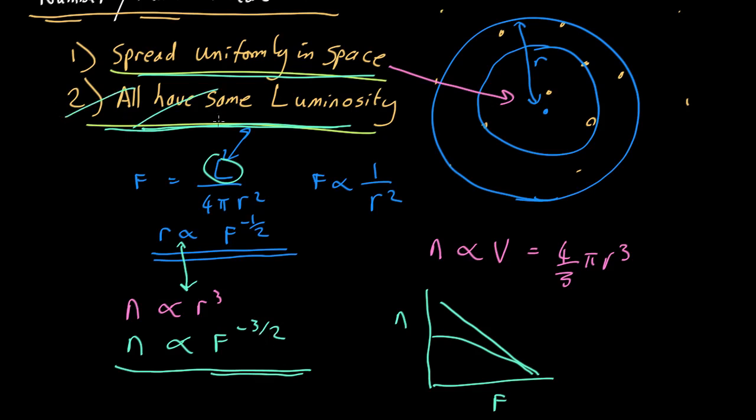So actually we can get rid of that assumption, our answer is the same. So if the numbers are not going as F to the minus 3 halves, the only possibility is that these things are not spread uniformly in space.